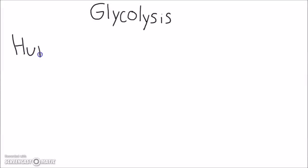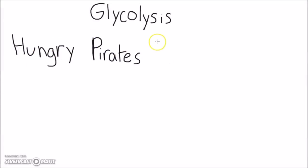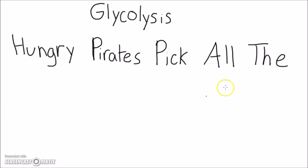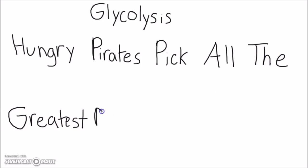Glycolysis is the process that the cell uses to generate energy anaerobically. It uses glucose to make a net of two molecules of ATP.